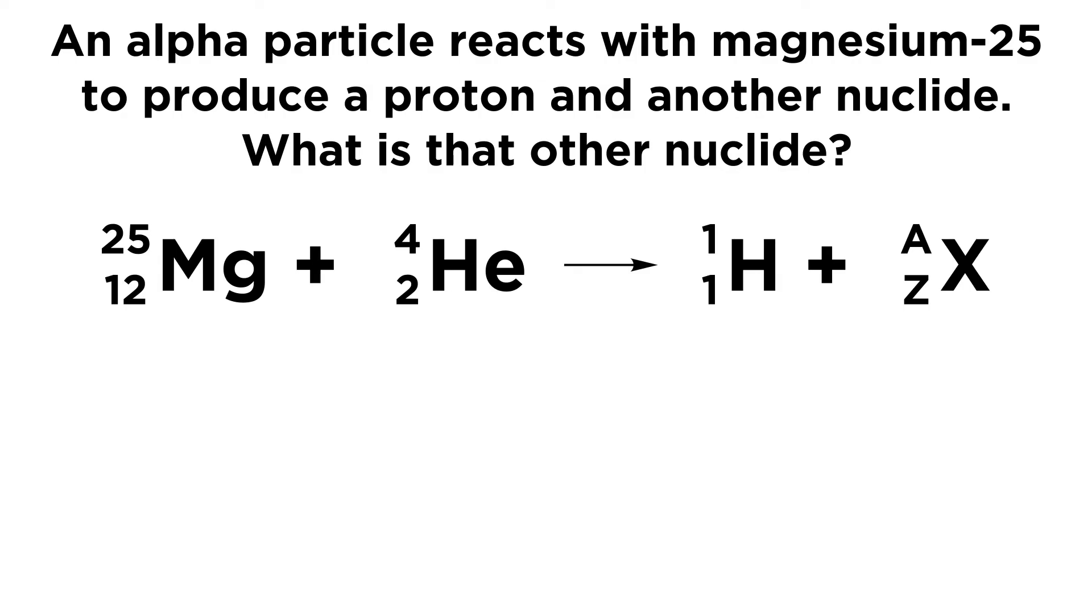And then lastly, we have another nuclide. We don't know what the nuclide is yet, so we can just represent that as X, and we don't know either of these values, so let's just put Z and A, and we're going to calculate those now.